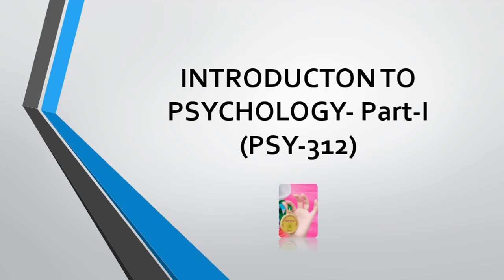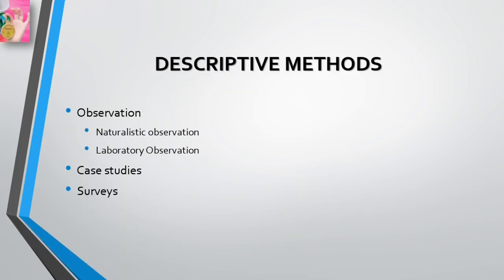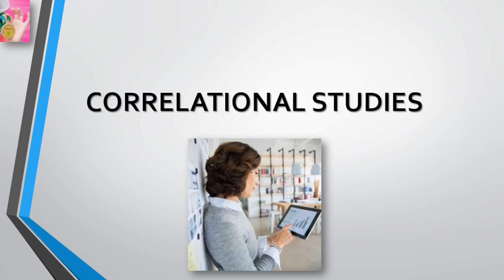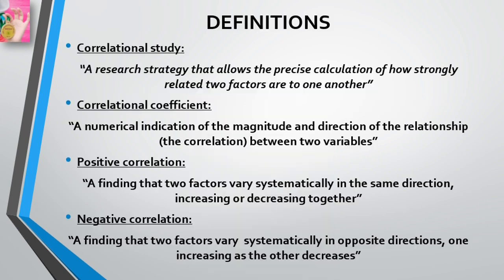Assalamu alaikum everyone. This is Introduction to Psychology Part One, PSY 312, by Dear Knowledge. Last time we discussed observations, its types — naturalistic observation and laboratory observations — case studies, surveys, and their advantages and disadvantages with examples. Today in this video we will be discussing correlational studies.